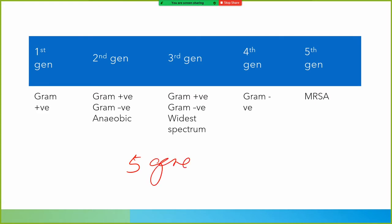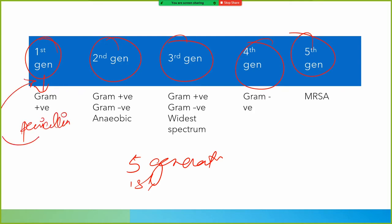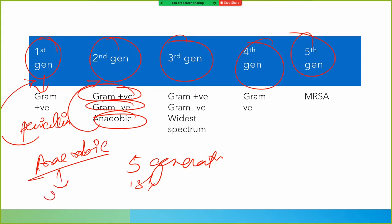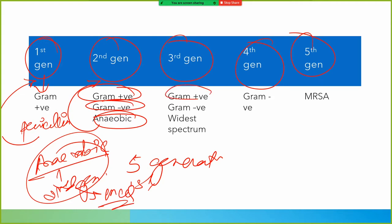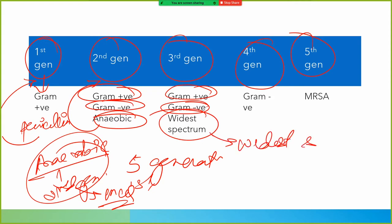Cephalosporins are divided into five generations: first, second, third, fourth, and fifth. The first generation is effective only against gram-positive bacteria — it is more like penicillin. The second generation is effective against gram-positive, gram-negative, and anaerobic bacteria. Remember: second generation covers anaerobes — this is an MCQ point. The third generation is effective against gram-positive and gram-negative and has the widest spectrum of activity.